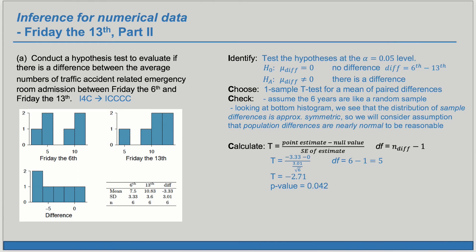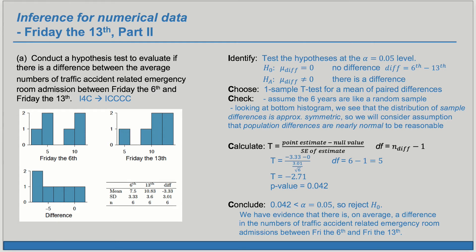Now we're ready for our conclusion. Our p-value is less than alpha, which we had set to 0.05. Because our p-value is less than alpha, we reject H₀. If we reject H₀, then we have evidence for Hₐ. So in this case, we have evidence that there is, on average, a difference in the numbers of traffic accident-related emergency room admissions between Friday the 6th and Friday the 13th.